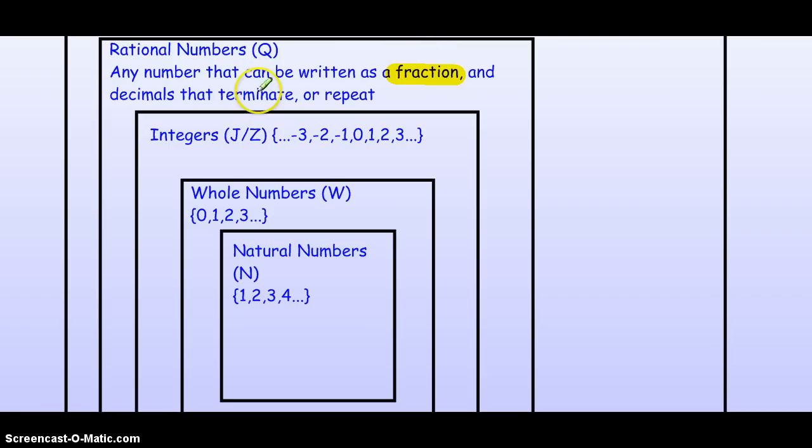So, the difference to remember is, other than fractions, rational numbers are decimals that terminate or repeat. So, the decimals have to do one of those two things for it to be rational.